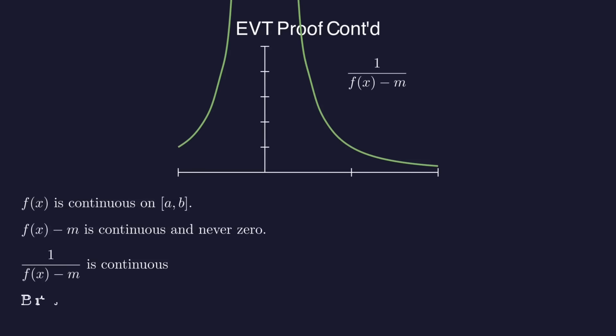But the previous theorem tells us that this new continuous function must be bounded on our interval, which is a contradiction, because we just said that it was unbounded. And that's the whole proof.